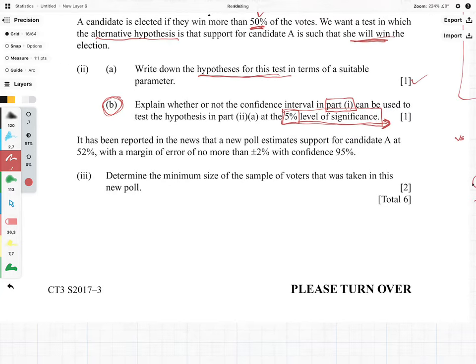Anyway let's move on to the last part of the question which says it has been reported in the news that a new poll estimates support for candidate A at 52 percent with a margin of error of no more than plus minus two percent with confidence 95 percent. Determine the minimum size - and what I like about the word minimum is that remember size has to be a whole number, which means we're going to be rounding up - because we need to have the minimum of the sample of voters that was taken in this new poll.